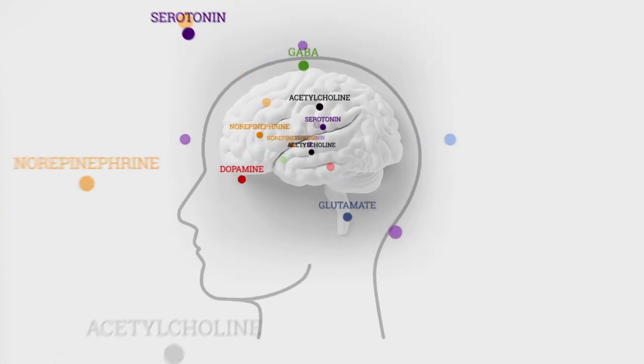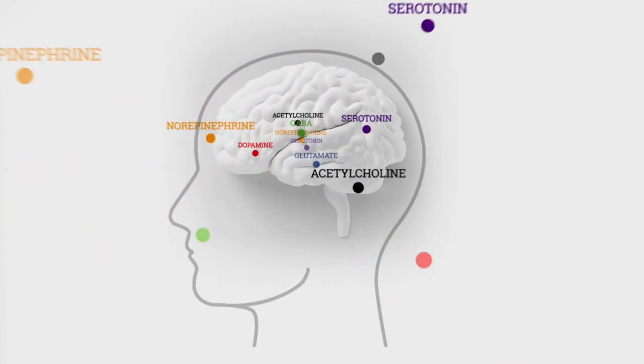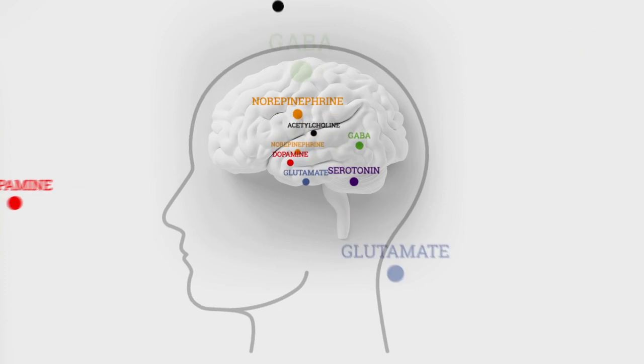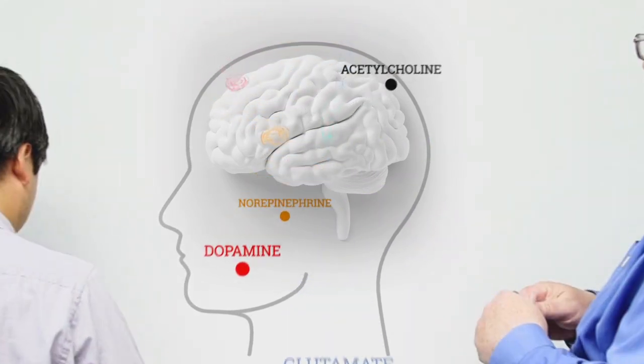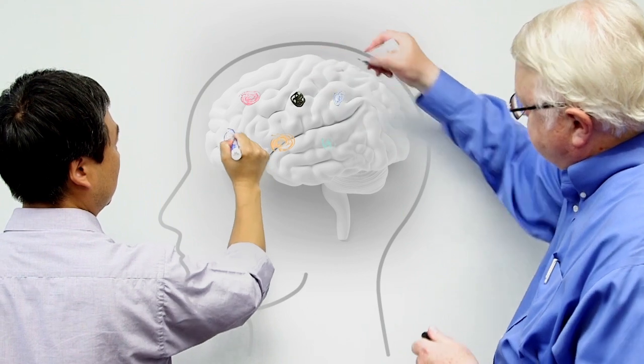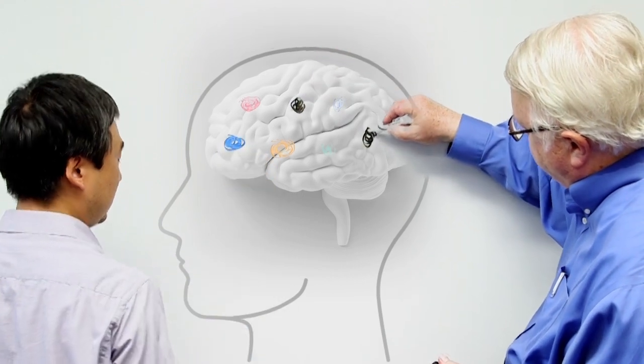Schizophrenia goes hand-in-hand with brain chemistry out of kilter. There are many chemicals involved, connected to many brain regions. It can be confusing. But now, Georgia Tech researchers have made it easier to get a grip on.